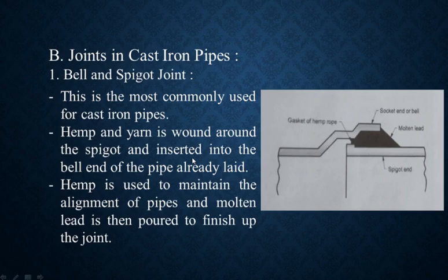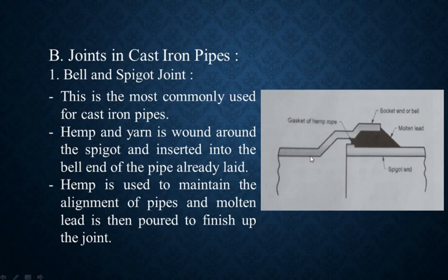Hemp or yarn is wound around the spigot end and inserted into the bell end of the pipe already laid. This is the spigot end — it is wound and wrapped with hemp or yarn and then inserted into the bell-type structure. Hemp is used to maintain the alignment of the pipes.